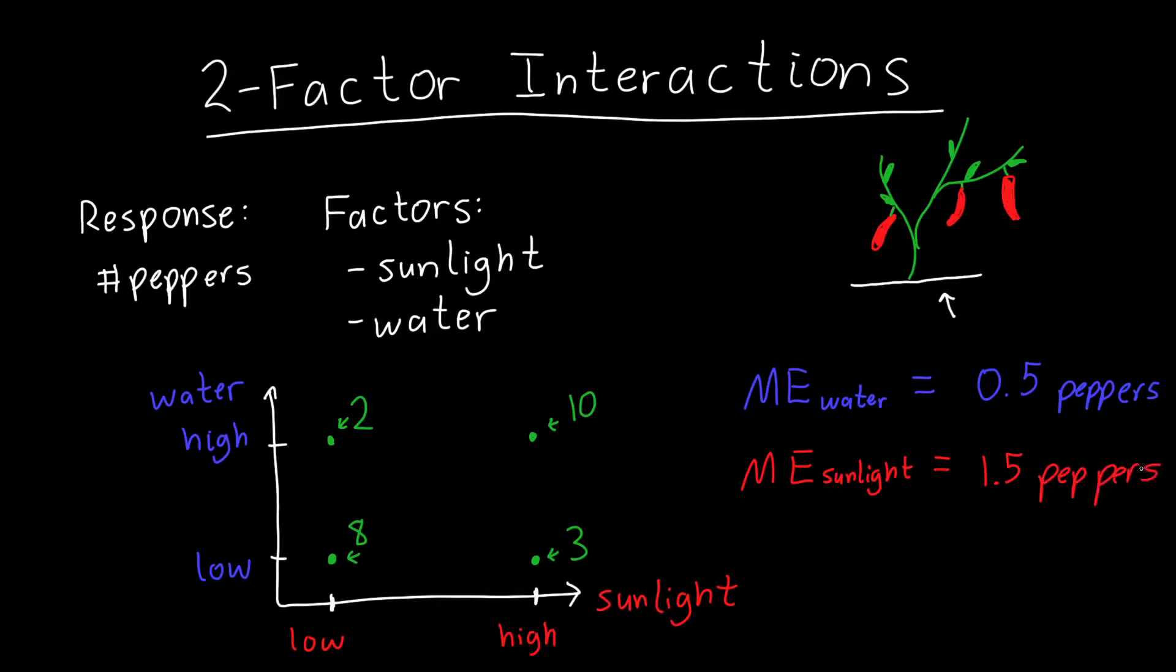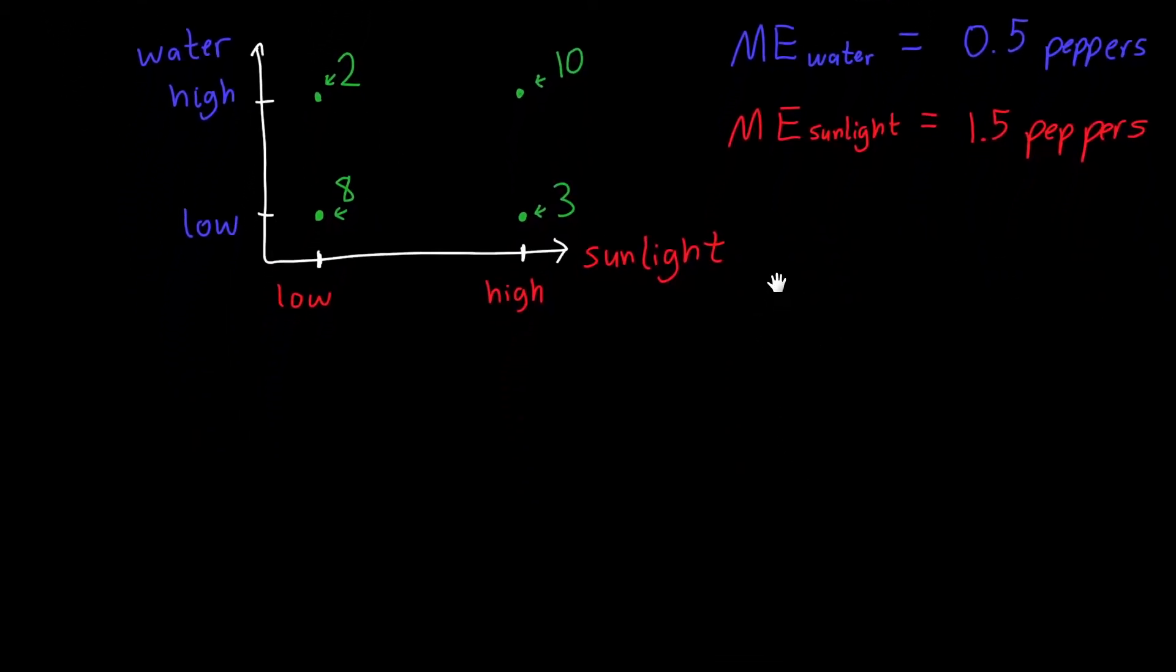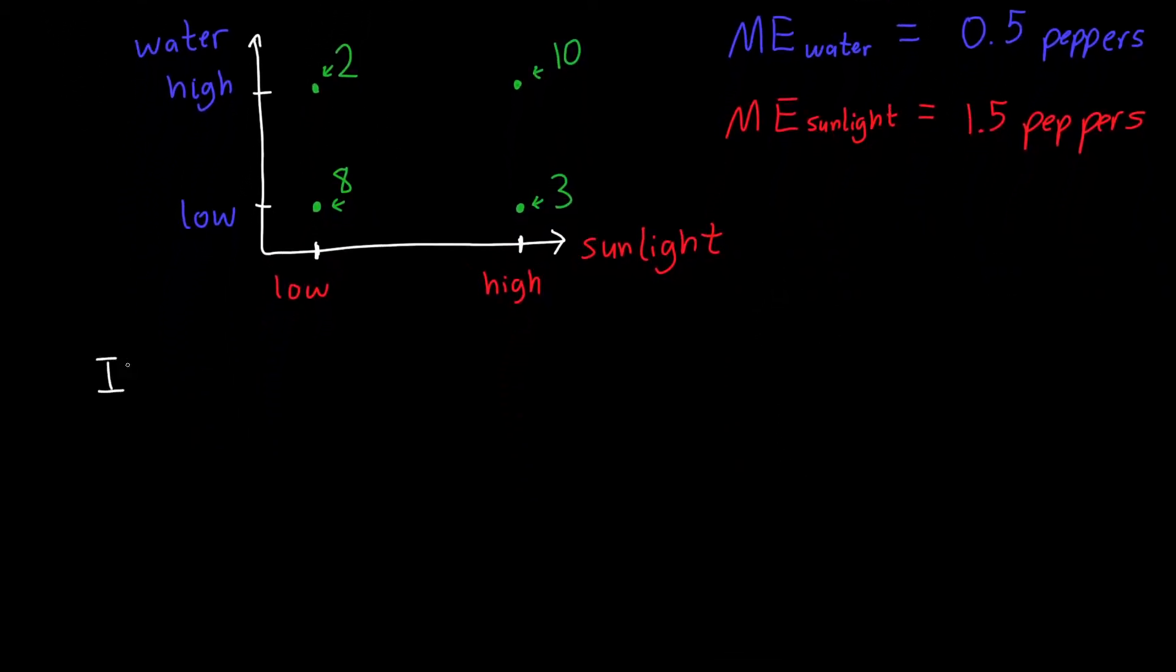But neither of these main effects, these independent effects, appear to be capturing the pretty dramatic differences in this plot. So we're missing something. We're not getting at everything that we want to be getting at. So this is a classic example of what we call an interaction effect. Or in particular, a two-factor interaction, because there's two factors involved here.